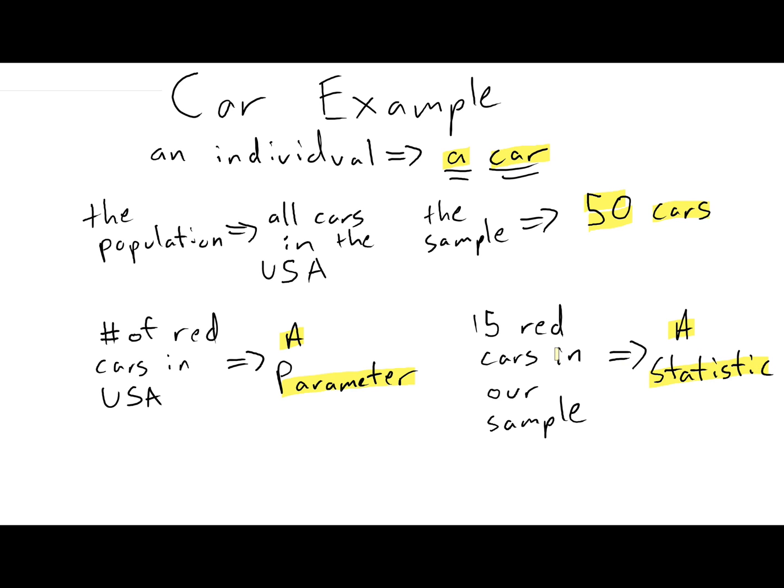This is a really important idea that we have a population and we have a sample. Those are groups of individuals, in this case groups of cars. And we have numbers that describe the population. Those are what's known as parameters. And we have numbers that describe our sample. And those are what are known as statistics. We will use these terms over and over again in this class.